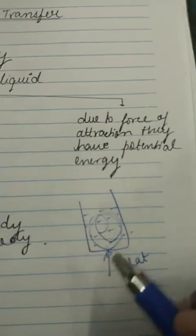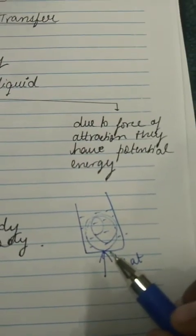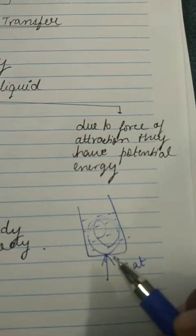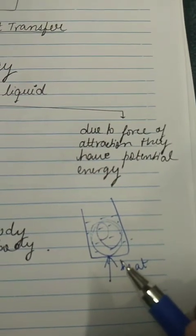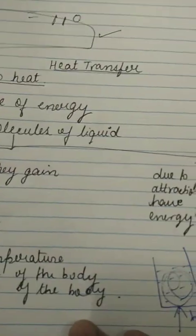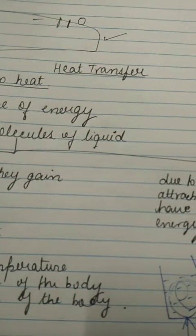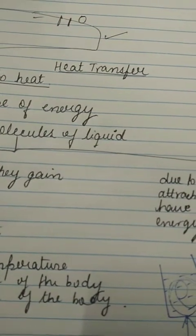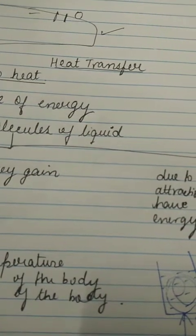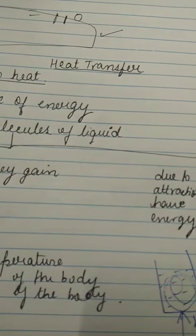We can see two kinds of energy: kinetic energy due to the motion of molecules in the glass, and potential energy due to the force of attraction. When a substance absorbs heat — for example water placed in a utensil — the motion of its molecules becomes rapid. When the substance is cooled, the motion of its molecules becomes slow and their kinetic energy decreases.